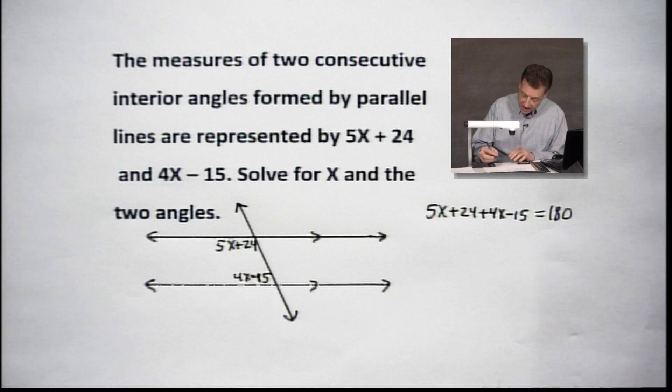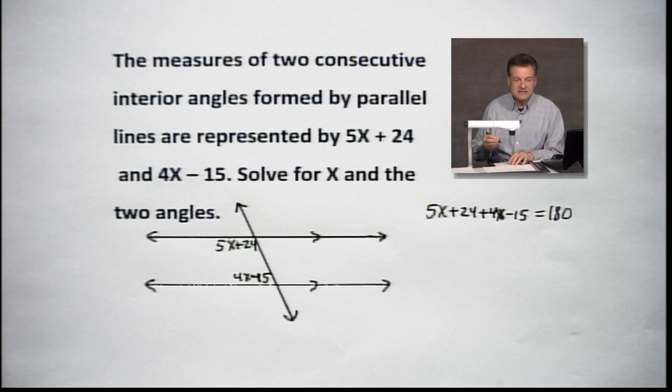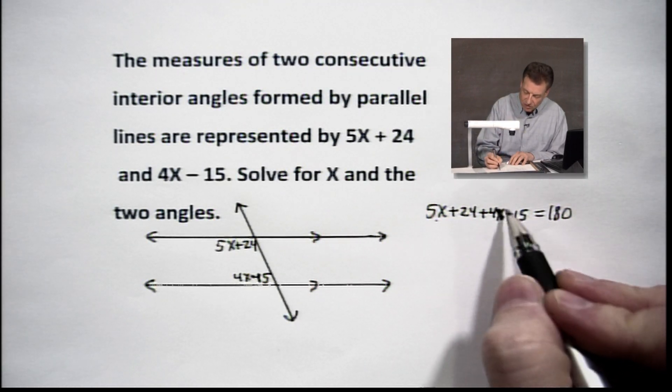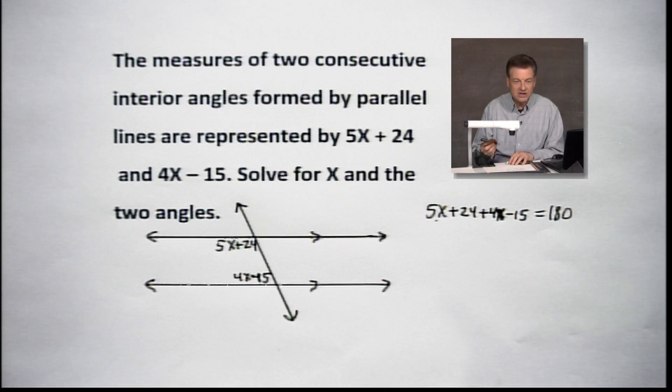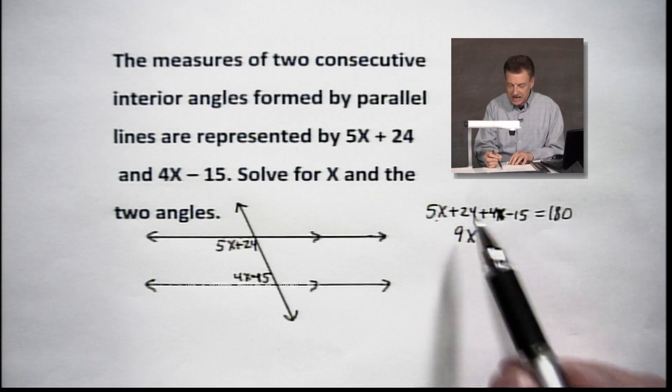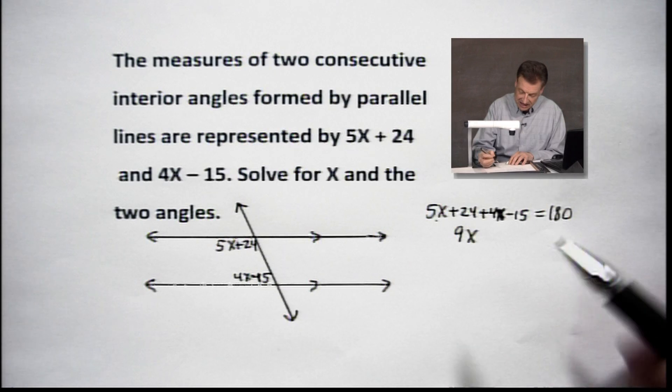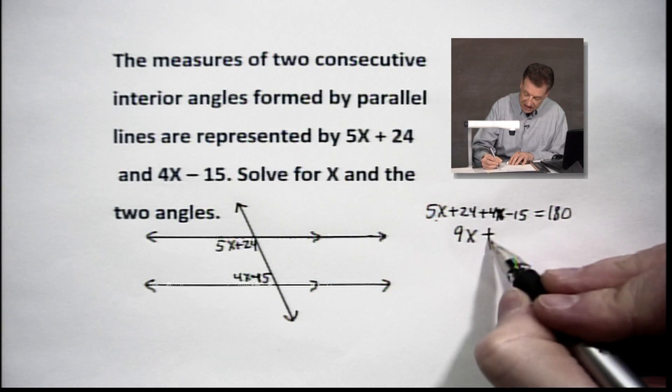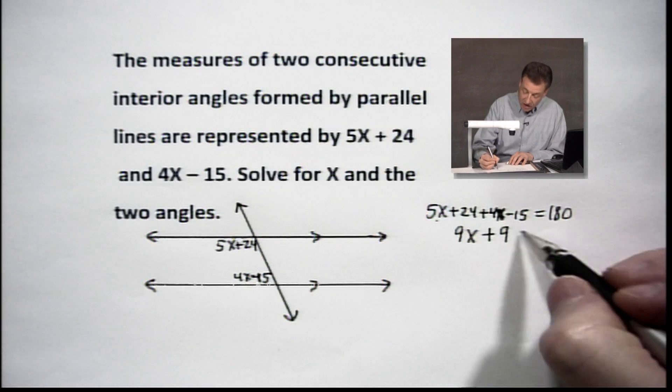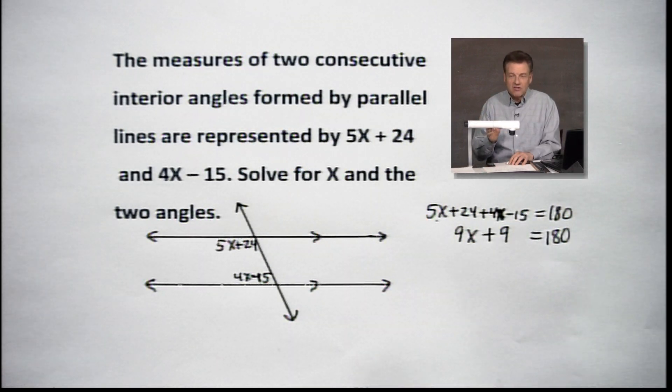What do we do? Well, we've got a lot of things we need to do here because we've got a lot of stuff hanging out on the left-hand side. Let's condense this. Let's take 5x and 4x - that's 9x because they're like terms. Let's also say 24 - 15, we've got a plus 9 going on there. And on the right-hand side we've still got our 180.